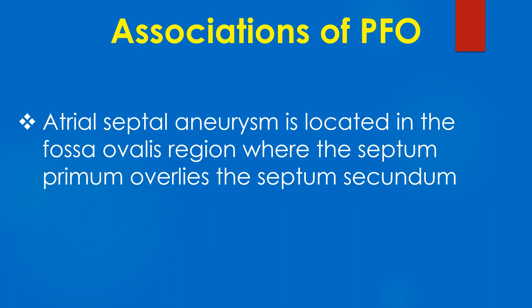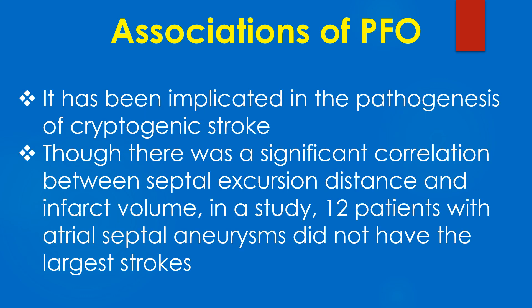Atrial septal aneurysm is located in the fossa ovalis region where the septum primum overlies the septum secundum. It has been implicated in the pathogenesis of cryptogenic stroke. Though there was a significant correlation between septal excursion distance and infarct volume in a study, 12 patients with atrial septal aneurysms did not have the largest strokes.